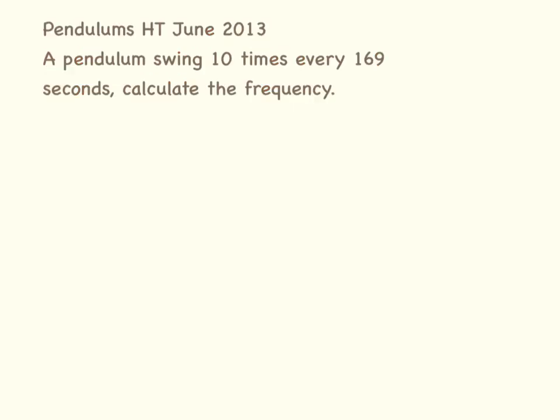So a pendulum swings 10 times every 169 seconds. Calculate the frequency. So we will need to know the time for one swing. If it swings 10 times every 169 seconds, then 169 divided by 10 equals 16.9 seconds, which is the time period for one swing.